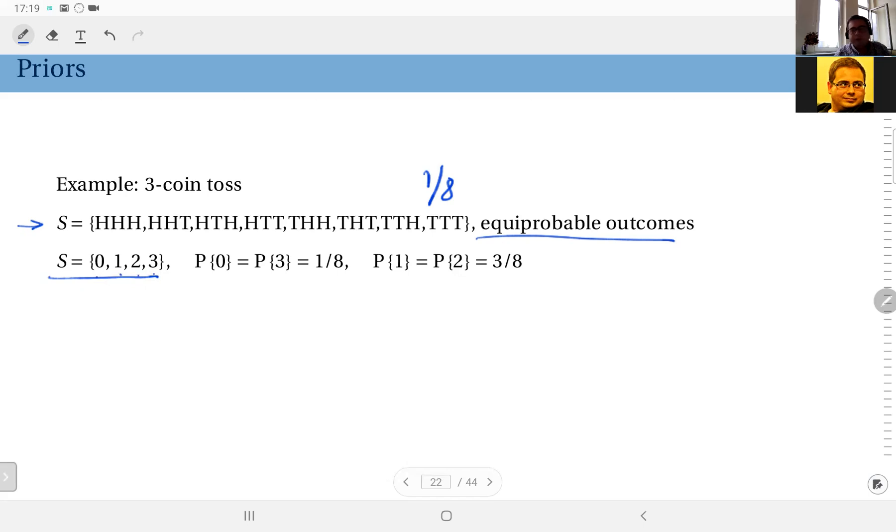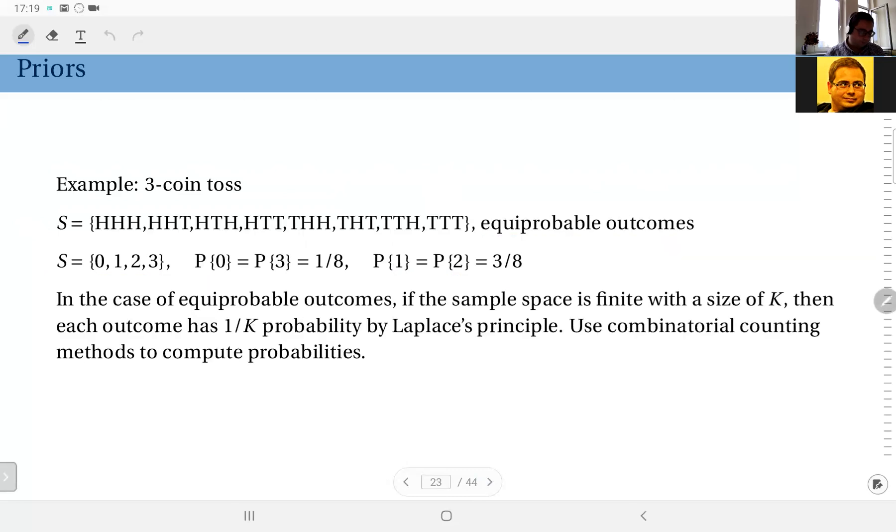But now you see, this sample space is not equiprobable. Because the probability of 0 heads and 3 heads is 1 over 8, and the probability of 1 heads and 2 heads is 3 over 8. So equiprobable assumption also is dependent on how you define the sample space.